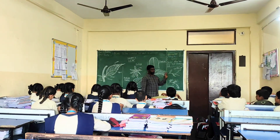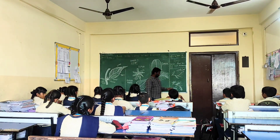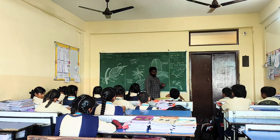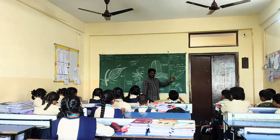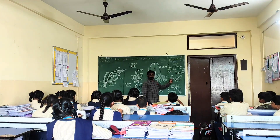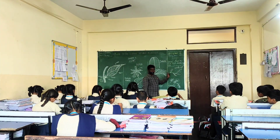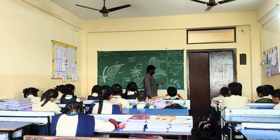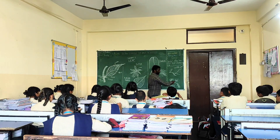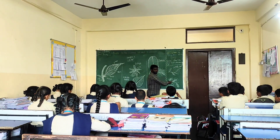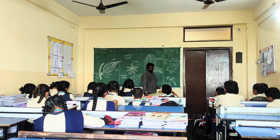Leaves are mainly of two types: simple leaf and compound leaf. In a simple leaf, a single lamina appears as one whole unit. In a compound leaf, the single lamina is divided into small leaflets. Thank you.